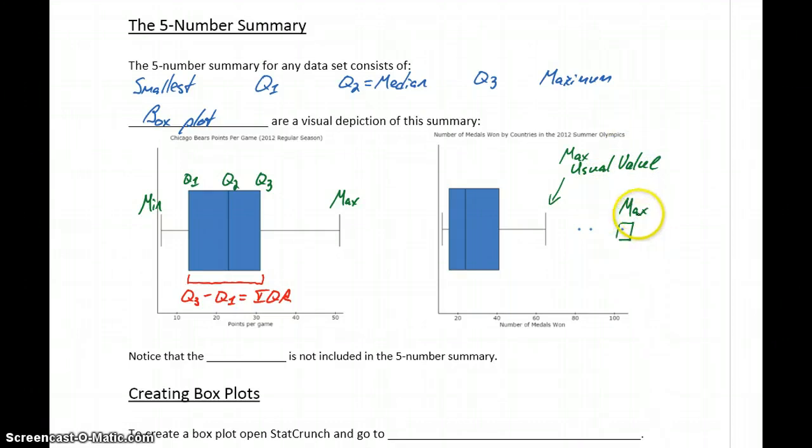So in the five-number summary, it's this maximum value, this dot that would be represented there, but the maximum usual value is separated as this fence, and then broken apart, we have these three separate dots indicating three additional data points.